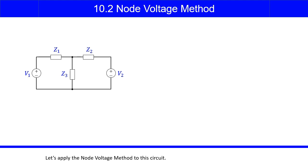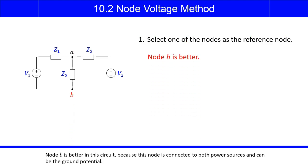Let's apply the node voltage method to this circuit. Select one of the nodes as the reference node. Node B is better in this circuit, because this node is connected to both power sources and can be the ground potential.